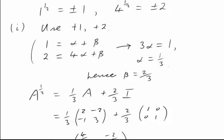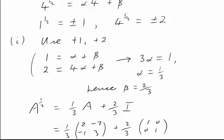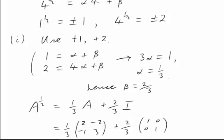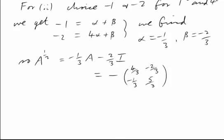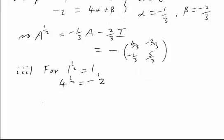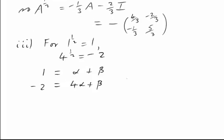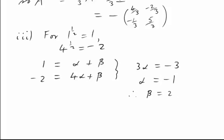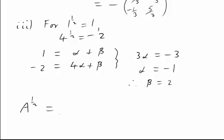What is surprising is that there are now two further square roots. This time I'm going to take the half powers to be one of them positive and the other negative. Let's take 1 to the half as 1 but take 4 to the half as negative 2. So this is the third case. Now we get different equations: 1 equals alpha plus beta and negative 2 equals 4 alpha plus beta. Subtracting gives us 3 alpha equals negative 3, so alpha is negative 1, and beta is 2. This gives us a completely new square root: A to the half equals minus 1 A plus 2 I.